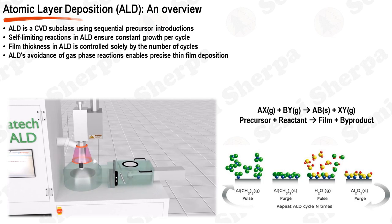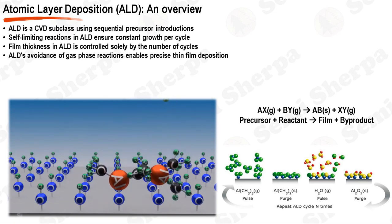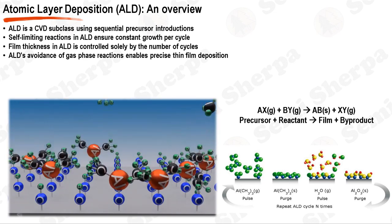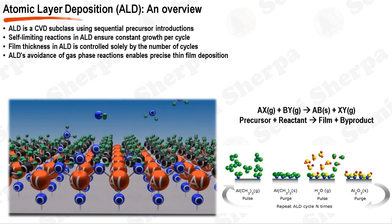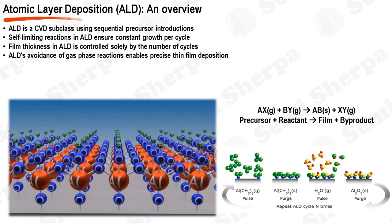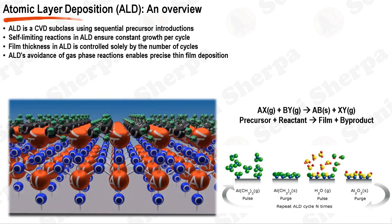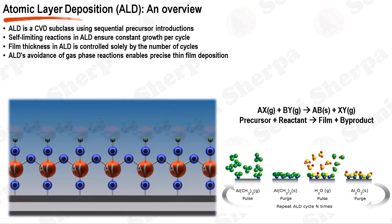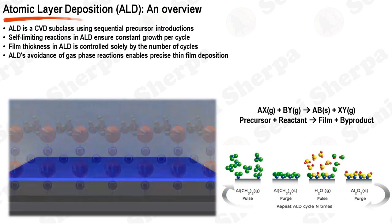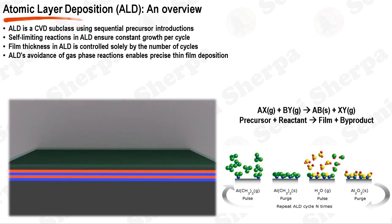After the TMA reaction, the chamber is purged with an inert gas, often nitrogen or argon, to remove any unreacted TMA and reaction byproducts, preventing unwanted gas phase reactions. The second half of the ALD cycle begins with the introduction of water vapor. The water molecules react with the Al-containing surface, forming a layer of Al2O3 and releasing methane gas. Similar to the TMA process, this reaction is also self-limiting. Once all the Al sites have reacted with water, the reaction stops.